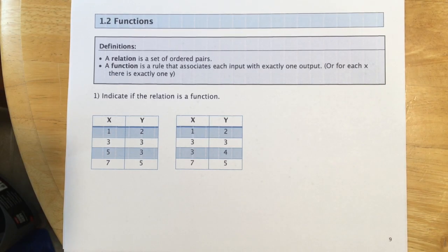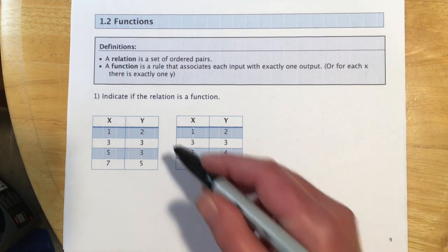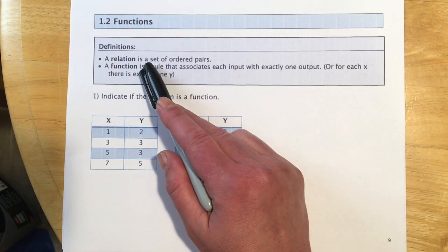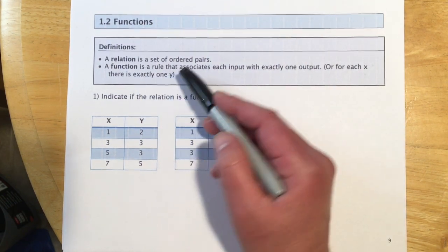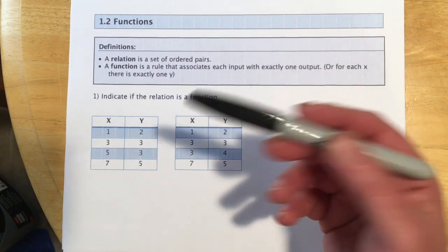Okay, this is Math 116, Section 1.2, Functions. Starting with a couple of definitions. First one is a relation, and it's just a set of ordered pairs. So any set of ordered pairs is a relation.